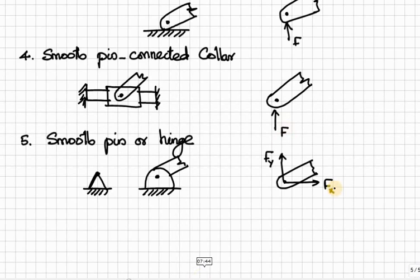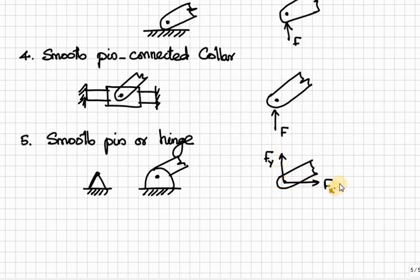The next one is pin or hinge. Here the only freedom is rotation - the member can rotate itself. The horizontal as well as vertical movement is arrested. Therefore, we have two reactions: one in the vertical direction and another one in the horizontal direction. For simplicity we resolve into two components in x and y directions, that is why we get Fx and Fy.